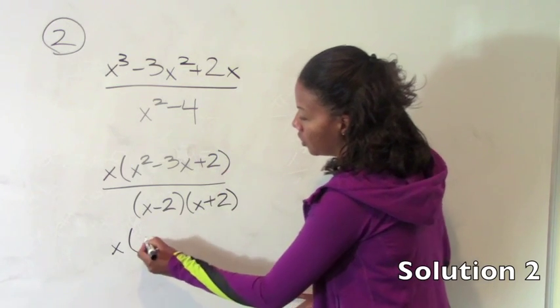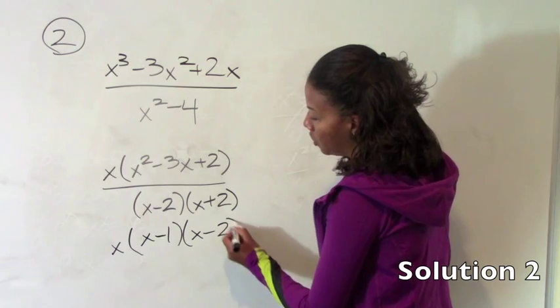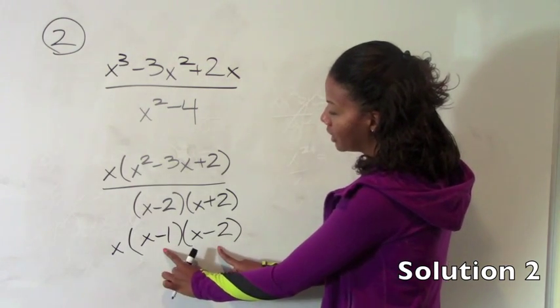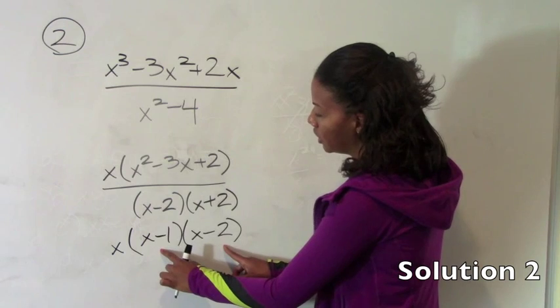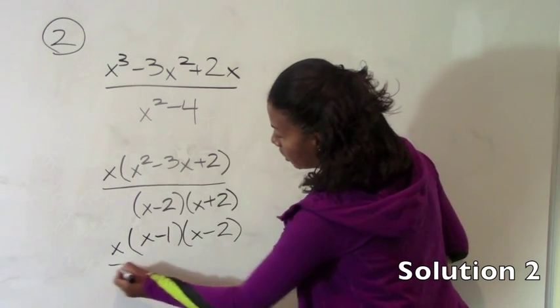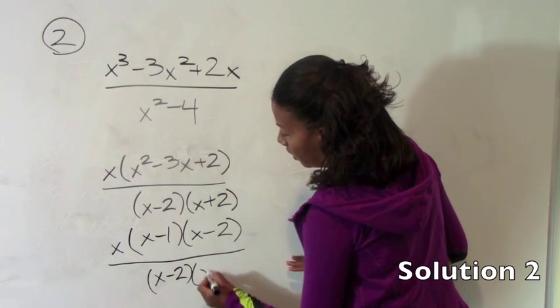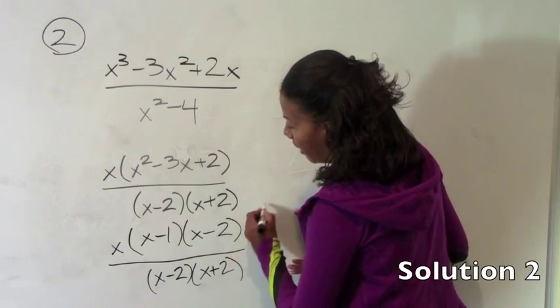So to get a positive 2, we need a minus 1 and a minus 2. So you'll notice that this product is positive 2 and the sum of these two numbers is negative 3. So that's our new numerator or our rewritten numerator over the denominator that we already factored.